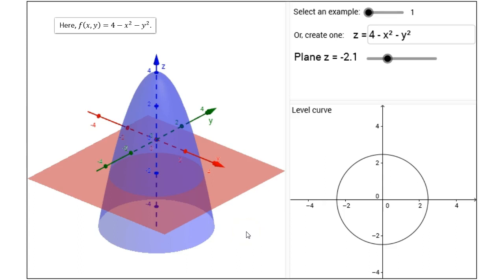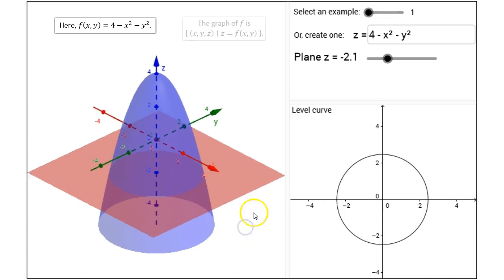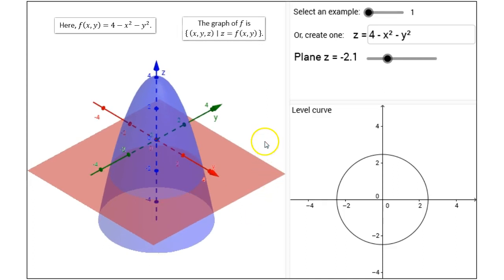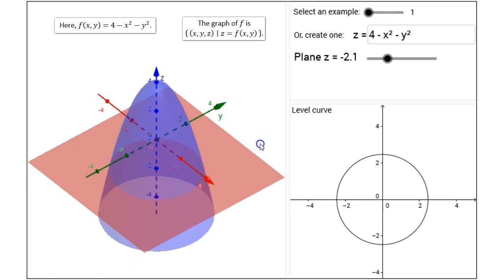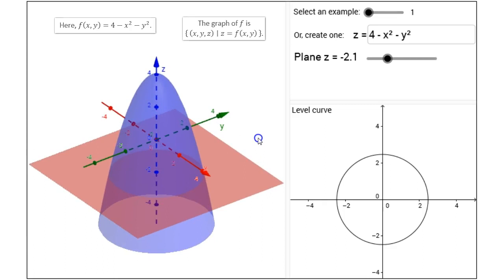So a function f of xy is given, and the graph of a function is the set of all points in space xyz such that z equals f of xy. The graph of such a function is called a surface.